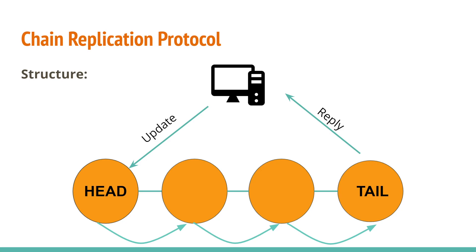Conversely, when the client wants to update a value, it sends the request to the head server. The head server computes the new value of the variable and forwards the request down the chain until it reaches the tail. Along the way, each server will apply the update to its local replica. Once the update request reaches the end, the tail will generate the reply and send it to the client. Because an update request has to pass through each server in the chain, it can involve a lot of latency and take a while. But the benefit is that all requests — queries and updates — are ultimately handled by one server, the tail server. Combined with serial execution, this guarantees that a query will return the most updated version of the data, and this is why the chain replication system is so consistent.